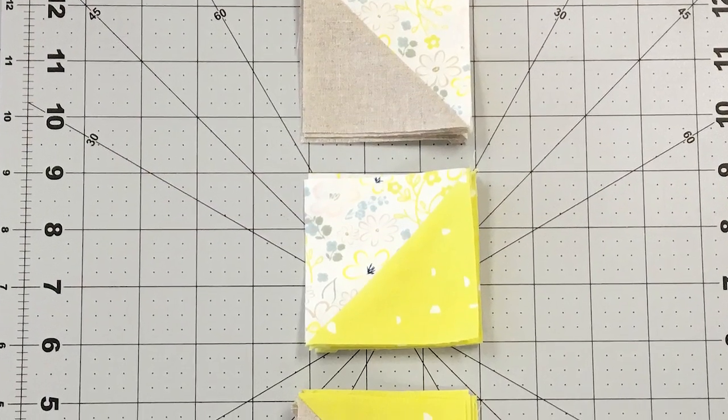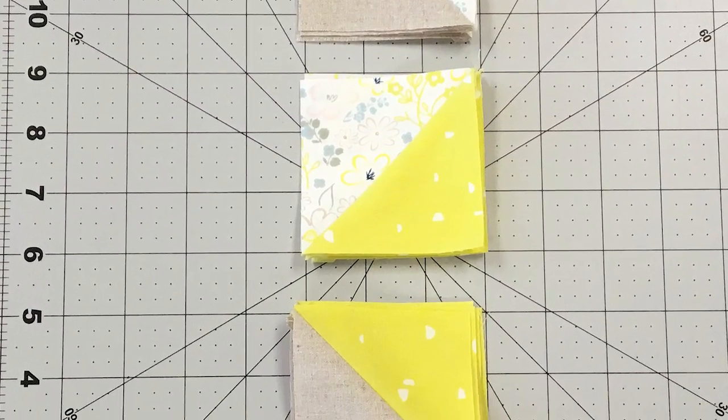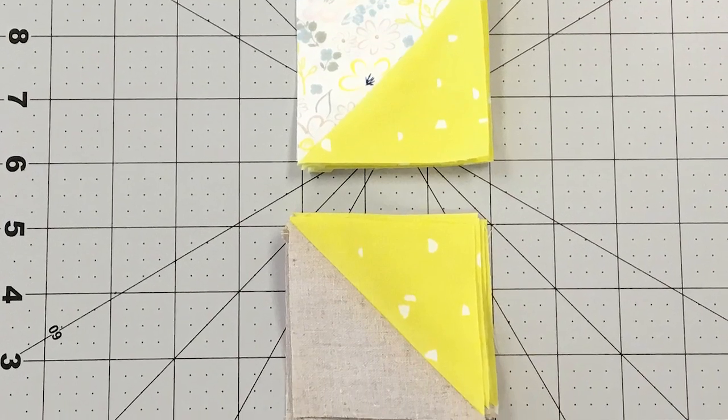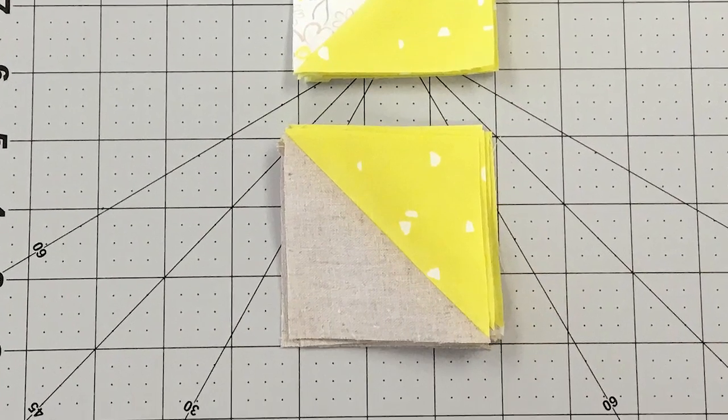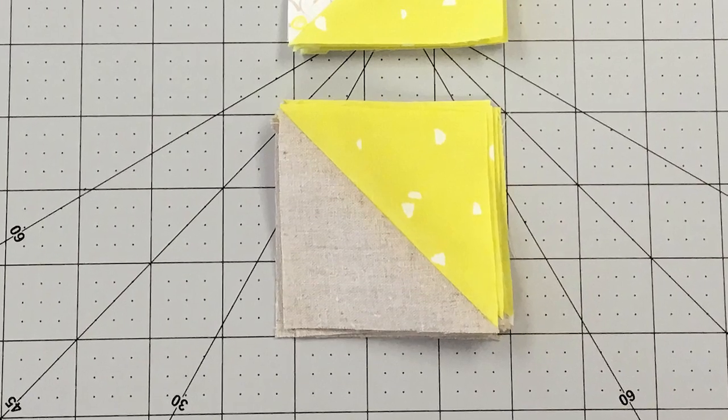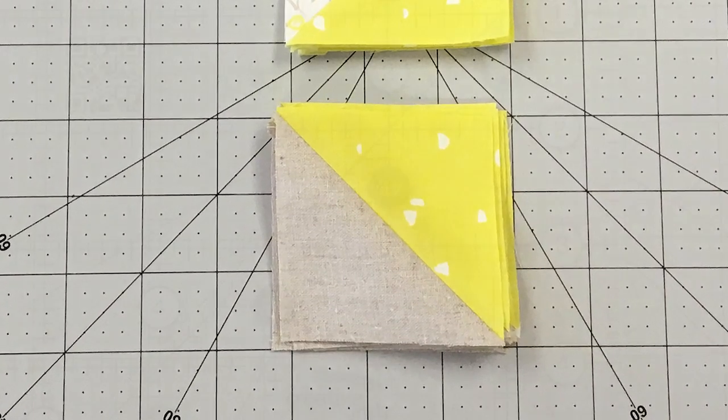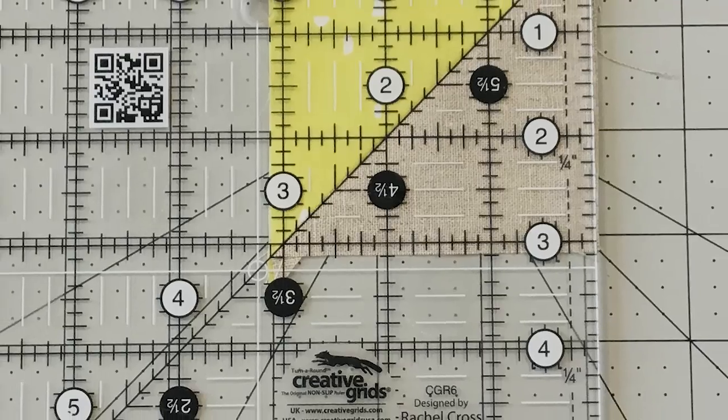A half square triangle is essentially two different square pieces of fabric sewn together to create a square with two triangles in it. In order to get your correct finished size of two and a half inches, you will need to add seven eighths to your two and a half inches, which is three and three eighths inch.